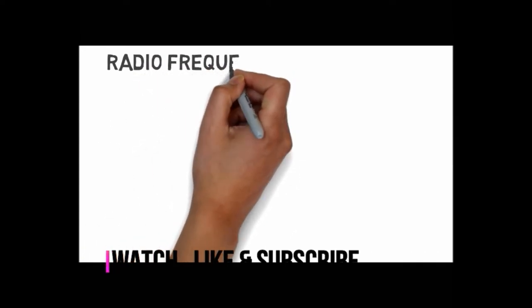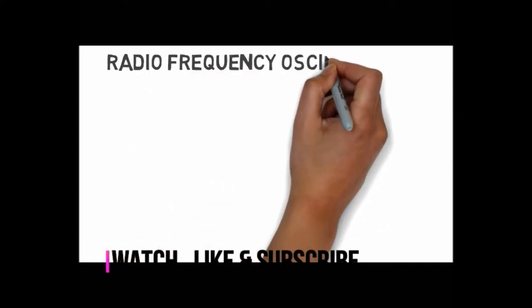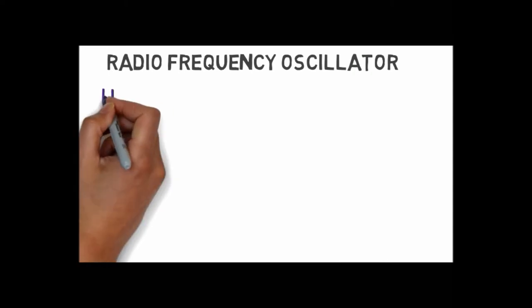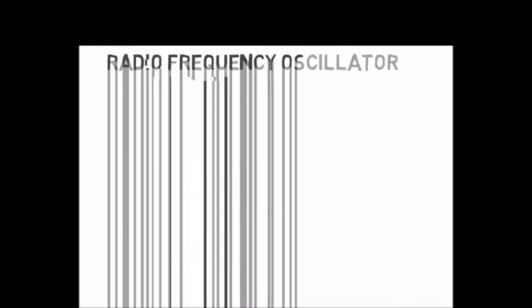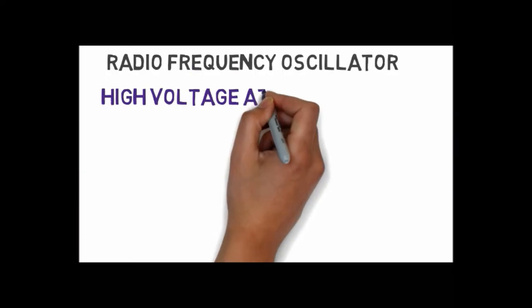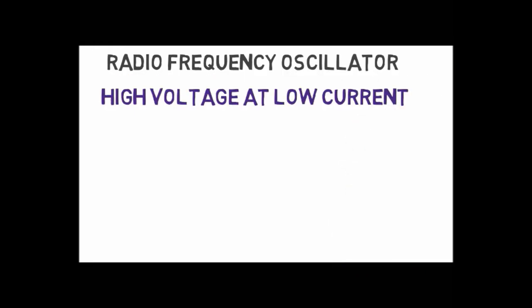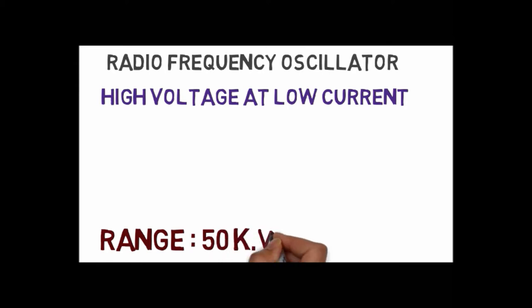The voltage rating starts from 50 kilovolts to several million volts. Nikola Tesla used this circuit to conduct experiments in electrical lighting, electrotherapy, generation, and so on.